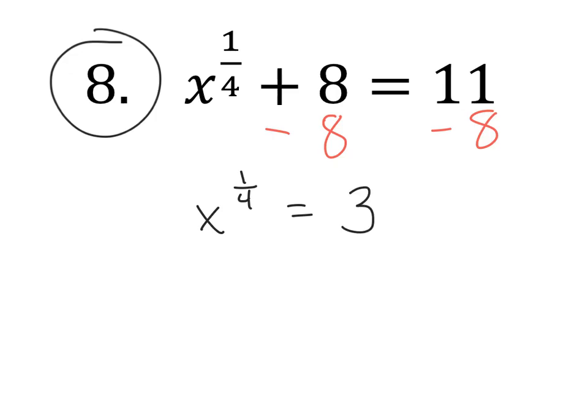And now we raise both sides to the reciprocal of one fourth. The reciprocal of one fourth is 4. That leaves us with just x on the left, and 3 to the 4th power is 81. And that's our final answer.